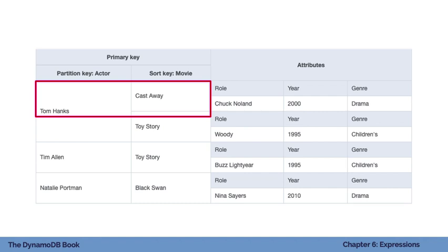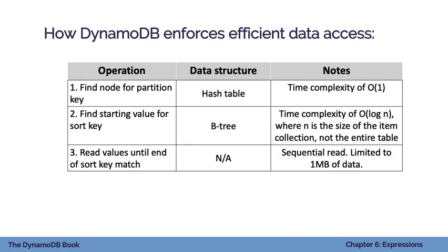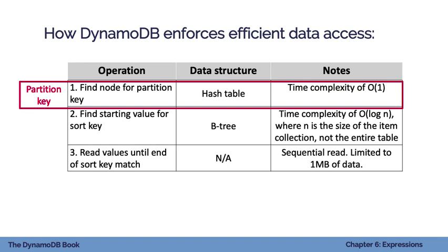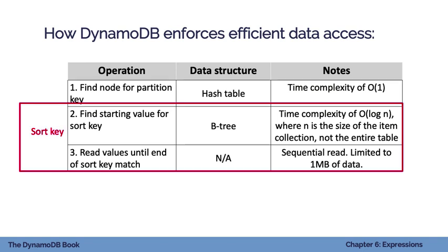DynamoDB enforces efficient data access on queries. When you send in a partition key, it first finds the node holding that key using a hash table, which has constant time complexity O(1) — no matter how big your dataset gets, it stays constant. If you want conditions on the sort key, DynamoDB finds the starting value using a B-tree to store sort key values, which has time complexity O(log N) — logarithmic time that doesn't get significantly slower as the dataset grows.